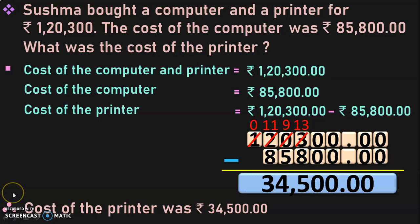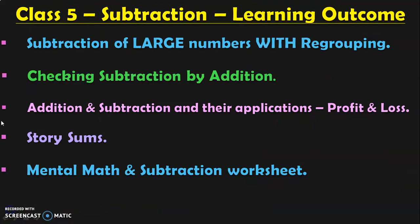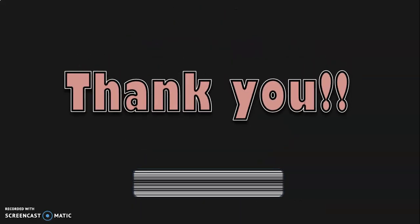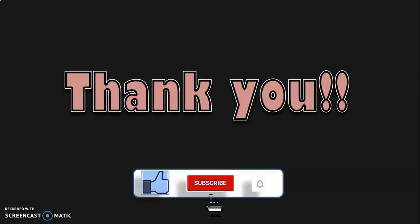Hope you understood how to approach sums involving both addition and subtraction. These are the learning outcomes for Class 5 under the subtraction topic: subtraction of large numbers with regrouping, checking subtraction by addition, and addition and subtraction with applications such as profit and loss — all dealt with in separate videos. In this video we covered story sums. The upcoming video will cover mental math and subtraction worksheets. Links to all related videos are in the description. Thank you for watching — give a thumbs up, subscribe, and click the bell for notifications. See you in the next video!